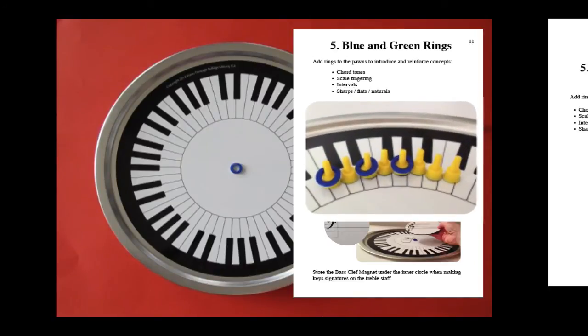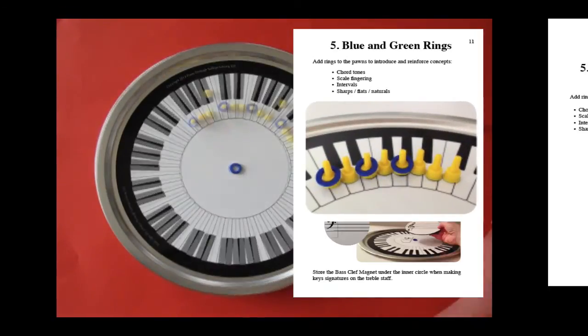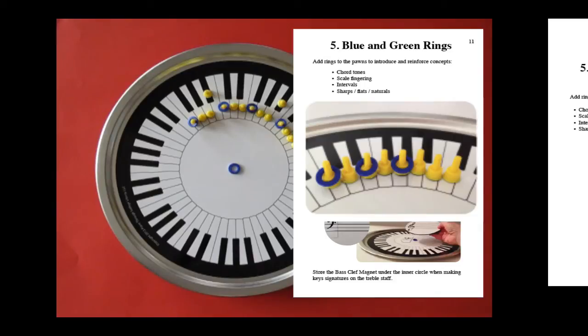Ten blue and green rings are included. They can be put over pawns to show which notes the thumb plays in an F major scale.